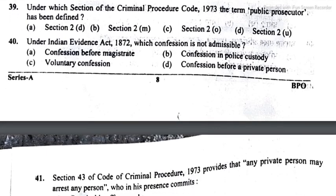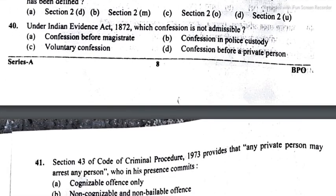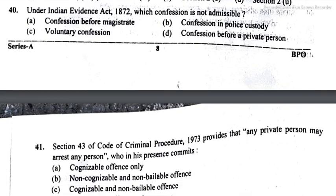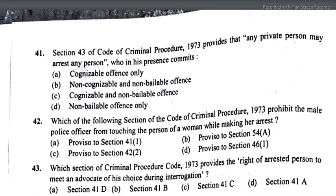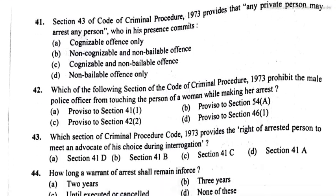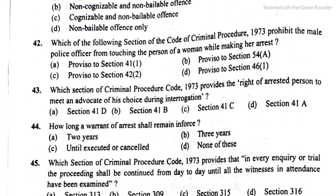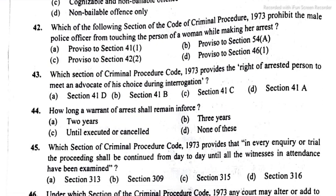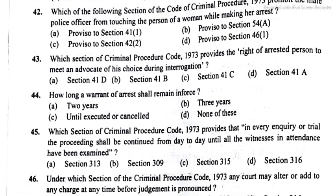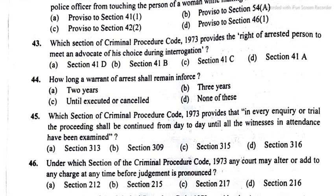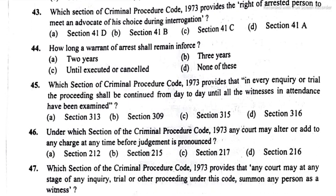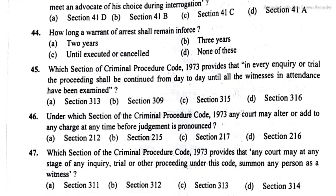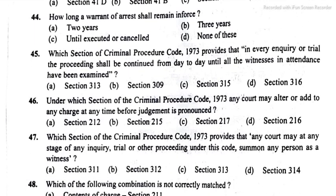The answer of question 40 is option B, confession in police custody. Question 41: option C, cognizable and non-bailable offense. Question 42: option D, proviso 2 of section 46. Question 43: option A. Question 44: option D. Question 45: option C, until executed or cancelled.